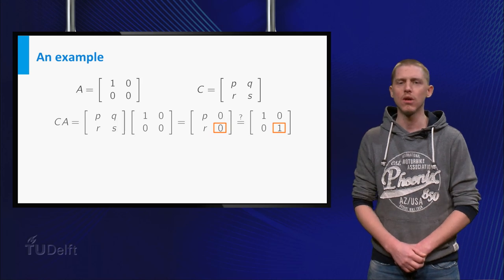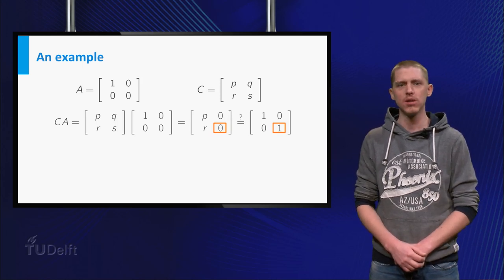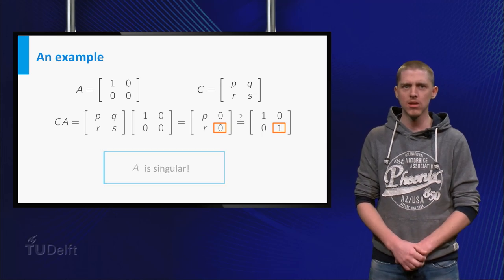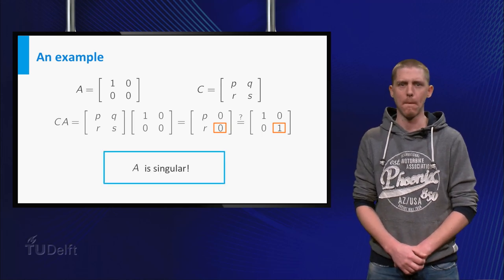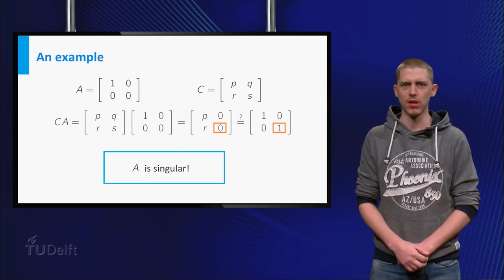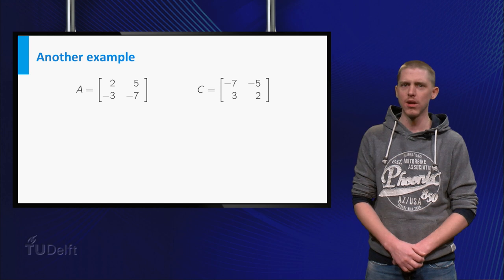This means that no values of P, Q, R and S are such that C times A equals I. So A is singular. So you now know that matrices with non-zeros can be singular. Let us try another example together.